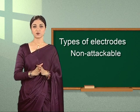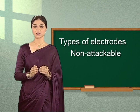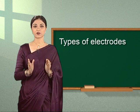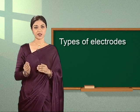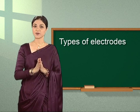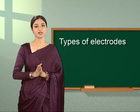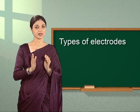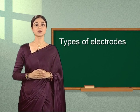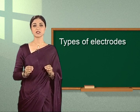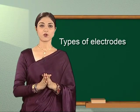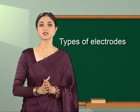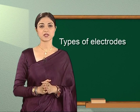Electrodes are broadly classified into two types: non-attackable and attackable electrodes. Non-attackable or inert electrodes, such as platinum or gold, simply act as carriers for electrons — accepted at the cathode and released at the anode — and are not involved in any chemical reaction. Attackable electrodes, such as copper electrodes, take part in the chemical reactions and influence the nature of the products. Therefore, the products of electrolysis differ depending on which type of electrode is used.